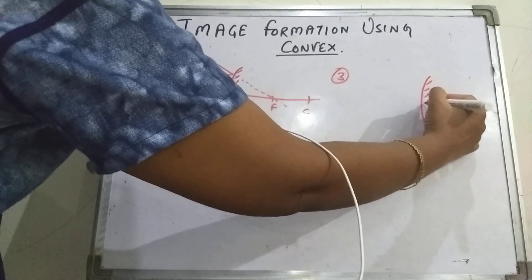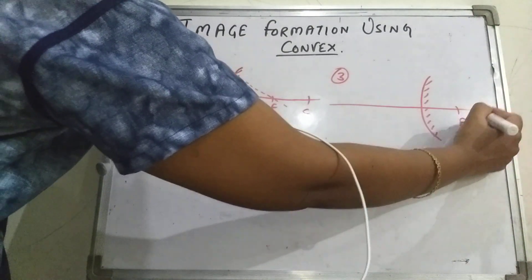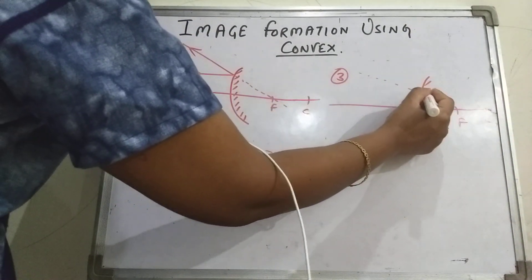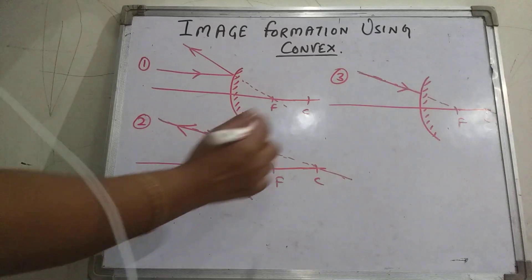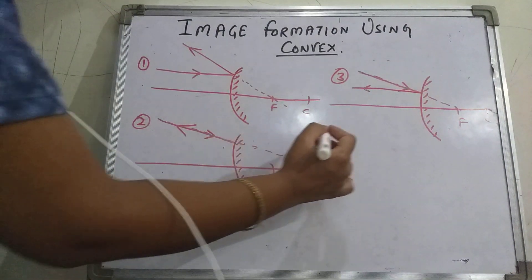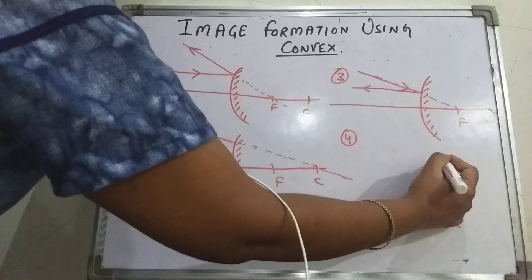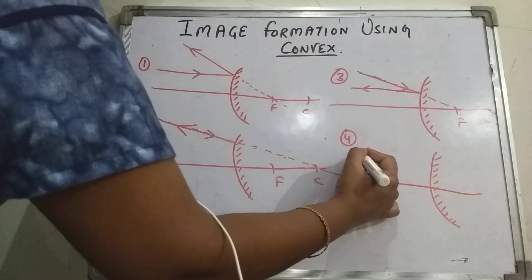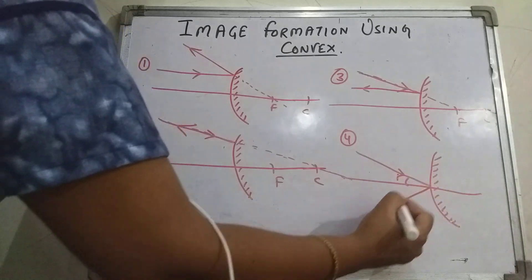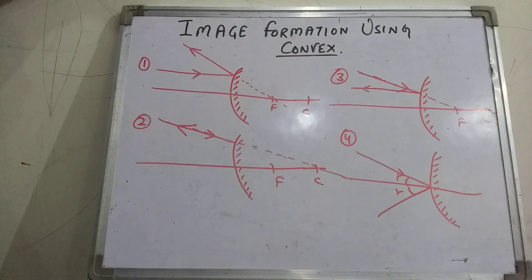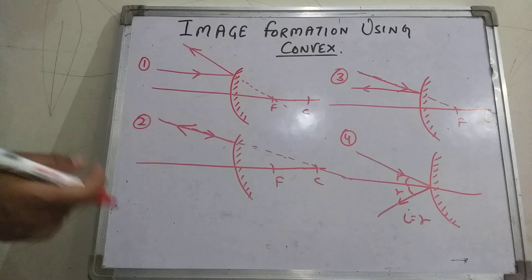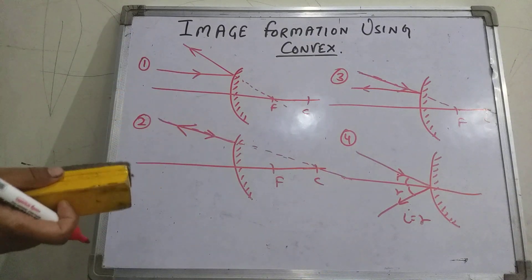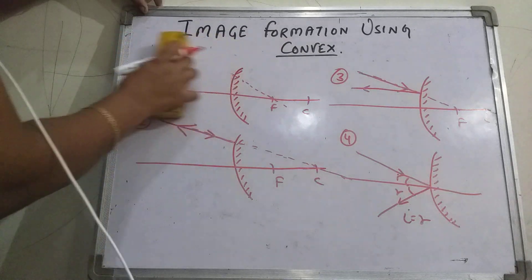Third rule: if a ray is incident in such a manner that it appears to pass through the focus, then the reflected ray is parallel to the principal axis. Fourth rule: if a ray is incident at an angle i, then it is reflected back with the same angle — that is, angle of reflection equals angle of incidence, according to the law of reflection, i.e., i = r. All these rules are the same as in concave; the only difference is in the way of presentation because focus and center of curvature are imaginary in this case.